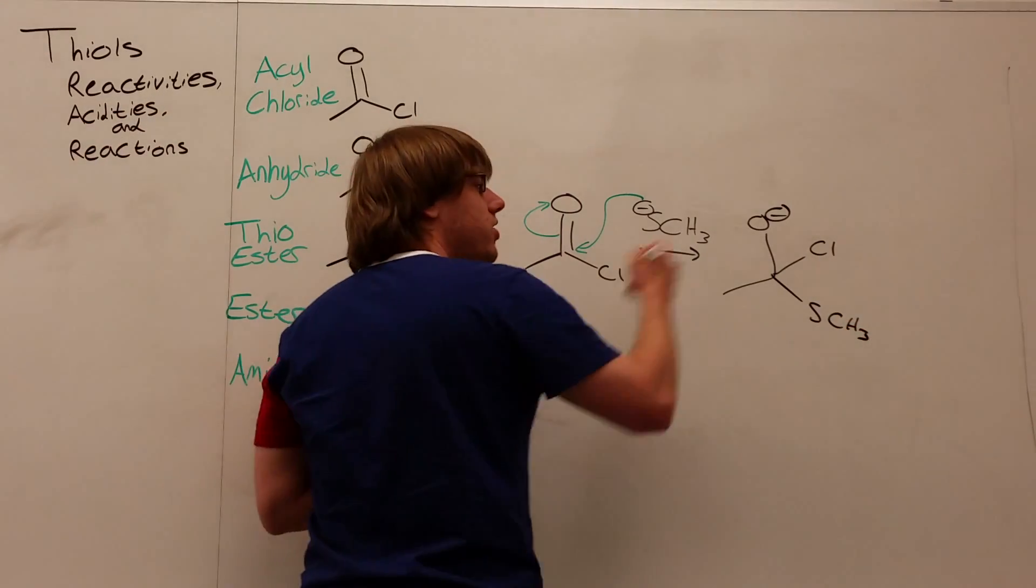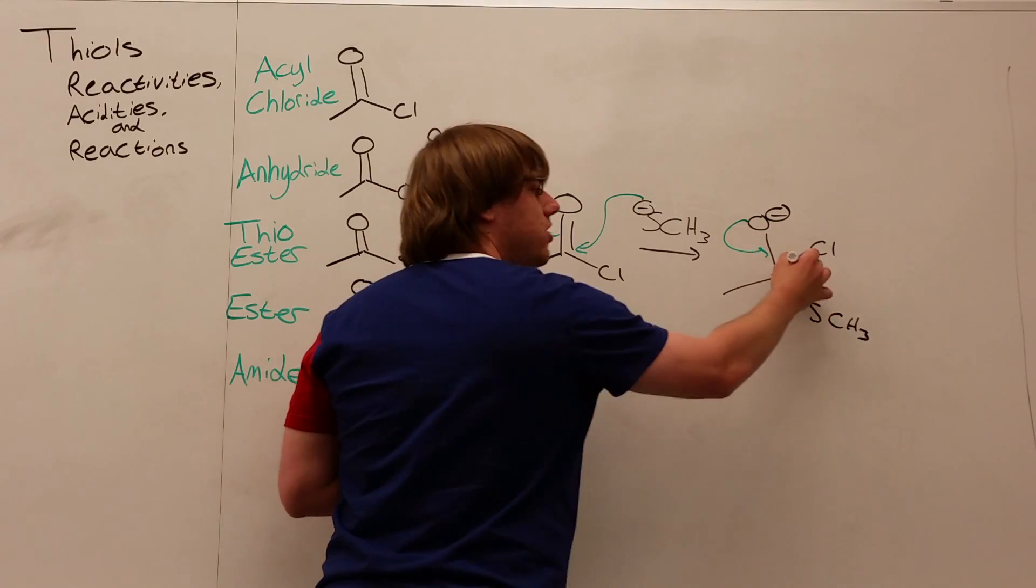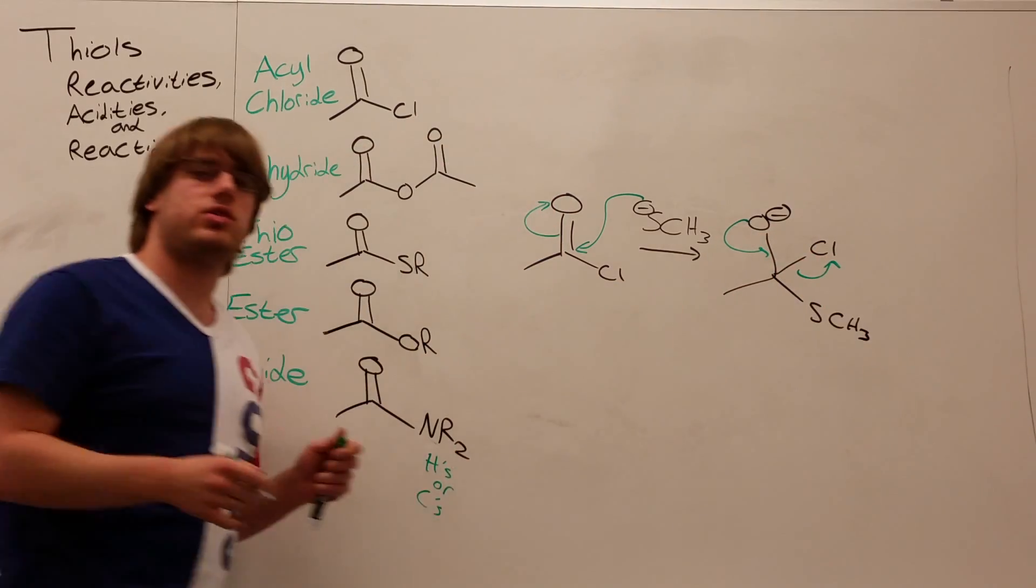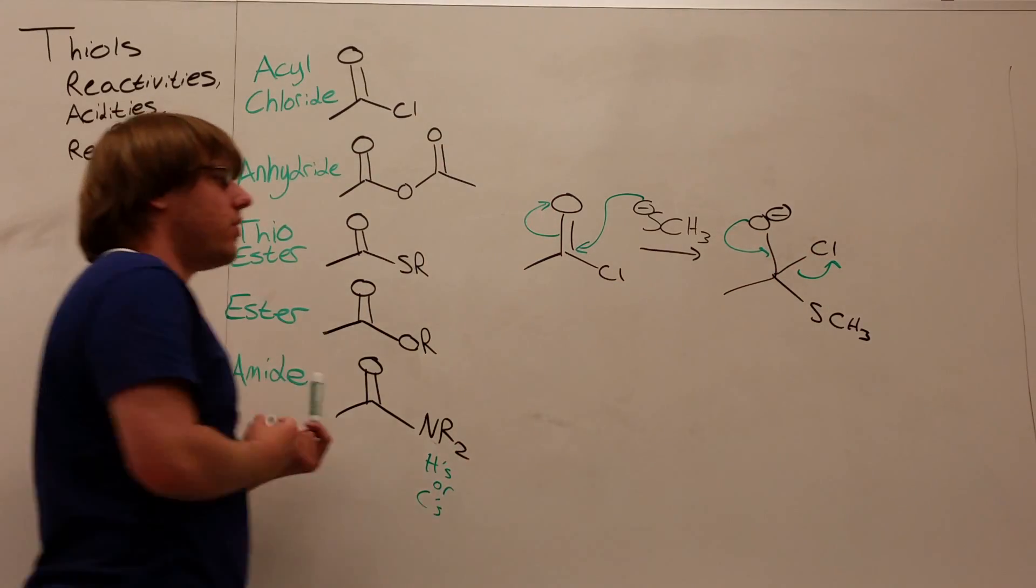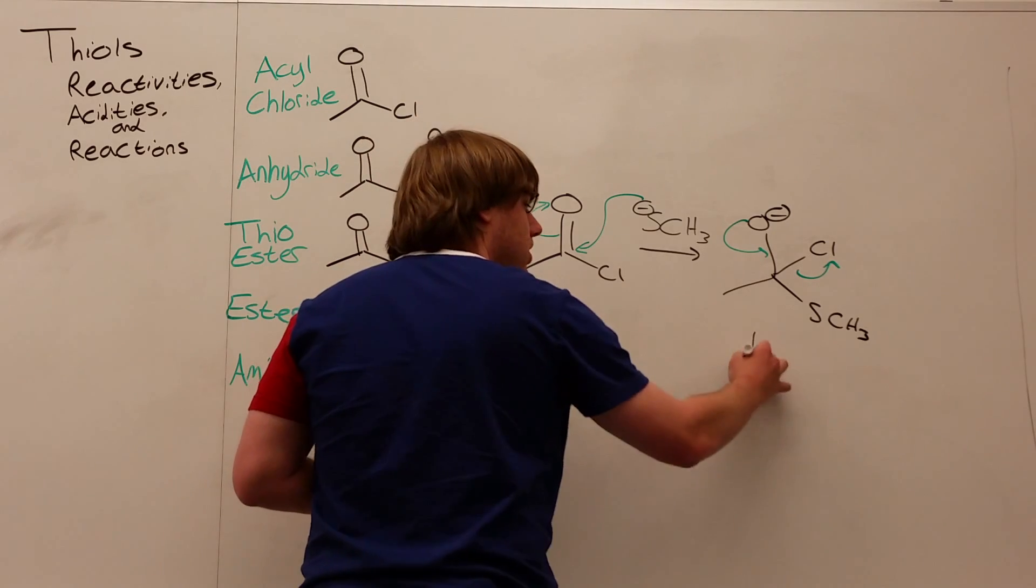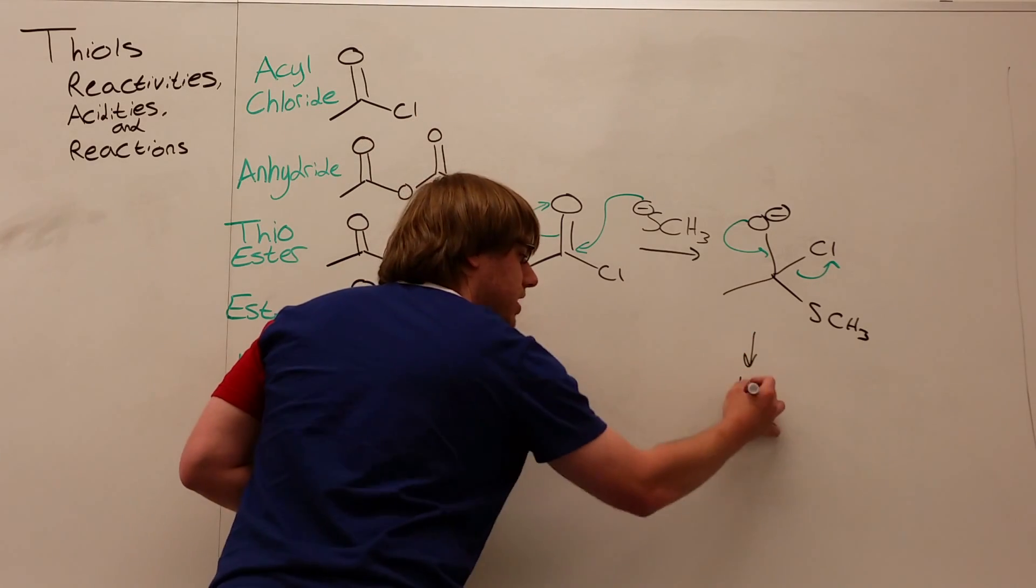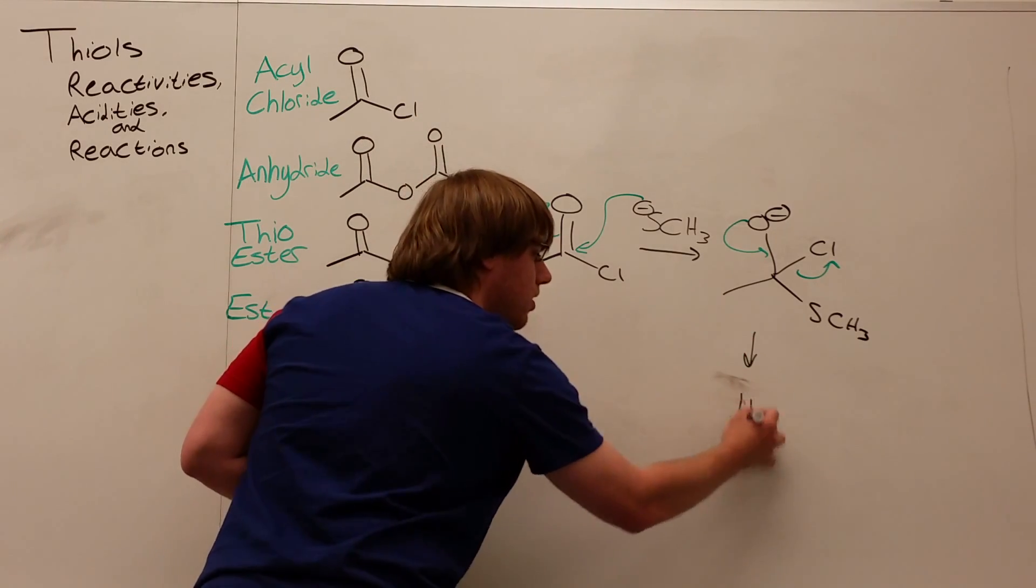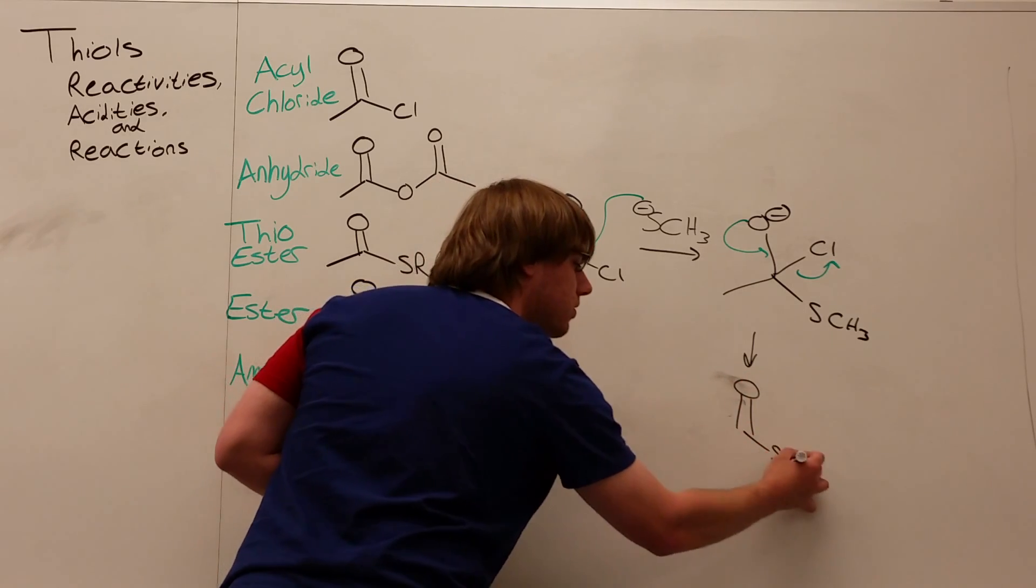And then what happens? Well, this should come as no surprise, the O minus swings down, and your best leaving group gets kicked out, in this case, the chlorine. And that's how all these acyl halide reactions work. But here's an example of using an acyl halide in a manner to make a thioester. So this is one of our main methods of making thioesters.